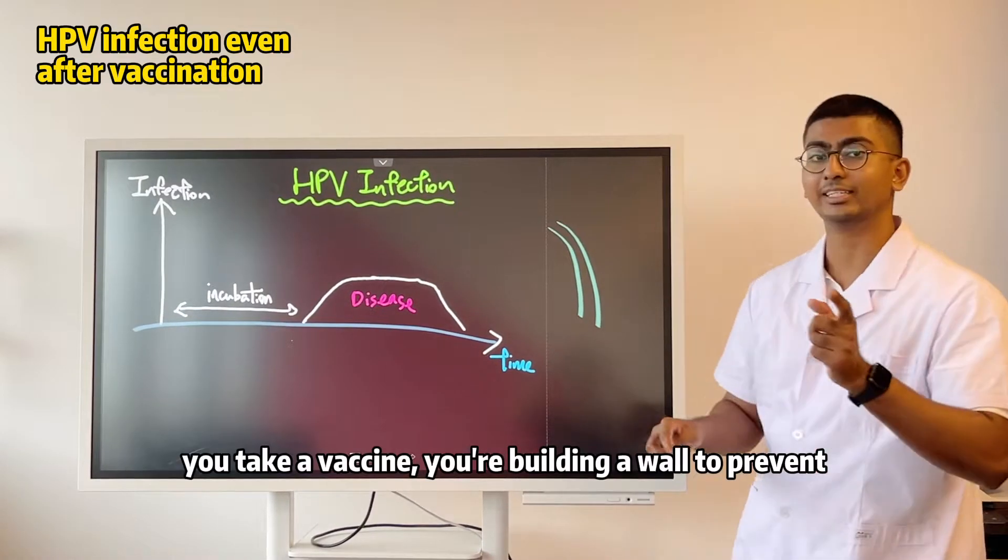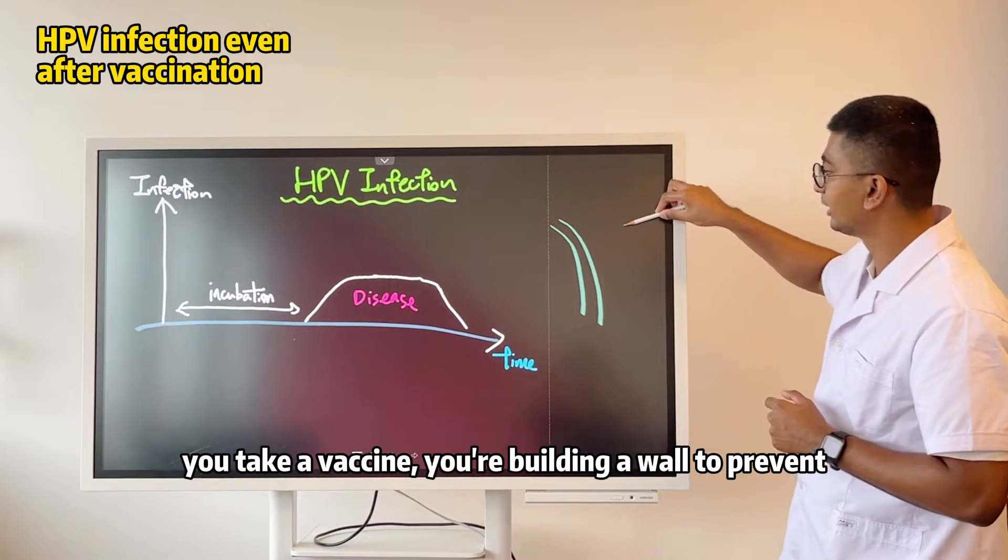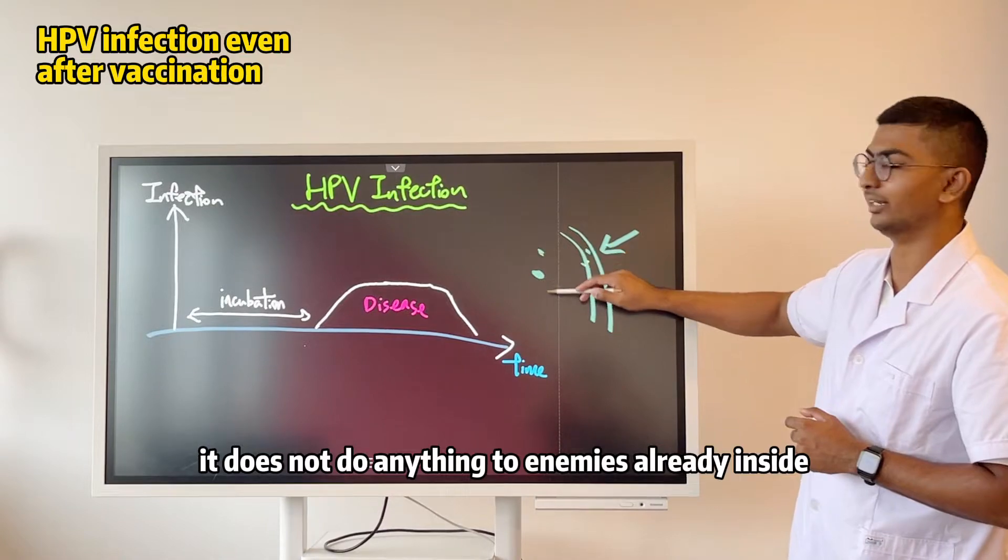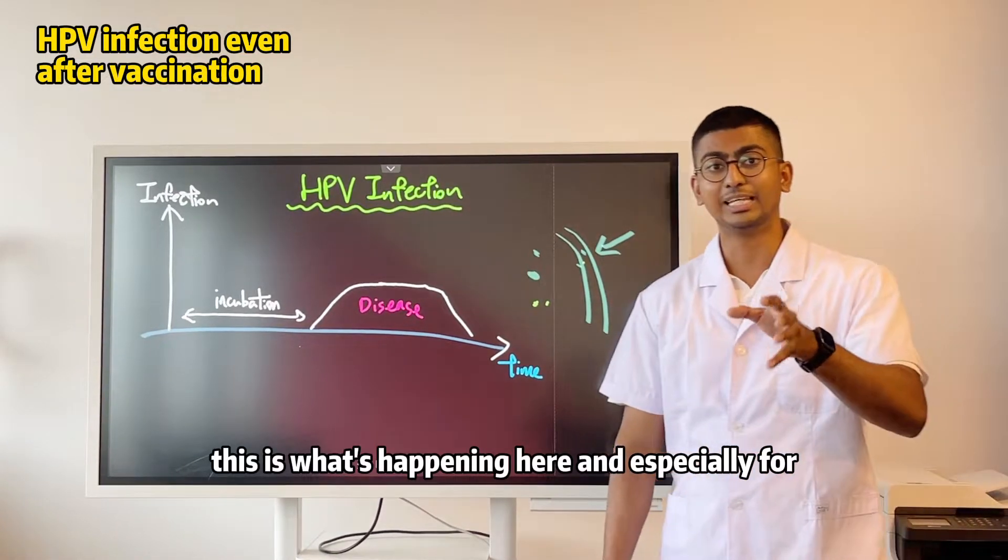When you build a wall, you take a vaccine, you're building a wall to prevent enemies from coming in. But it does not do anything to enemies already inside. So this is what's happening here.